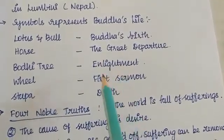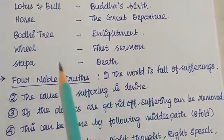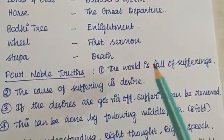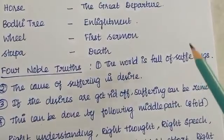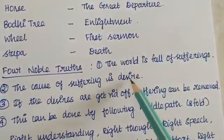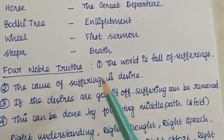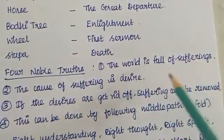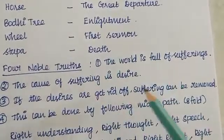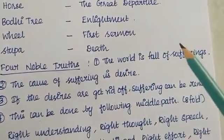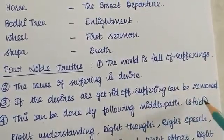If you are talking about Buddha, there are 4 Noble Truths. What is the Noble Truth? In the world, there is suffering. The cause of suffering is desire. Even the end of suffering is possible. So we need to follow the Eightfold Path to end suffering.